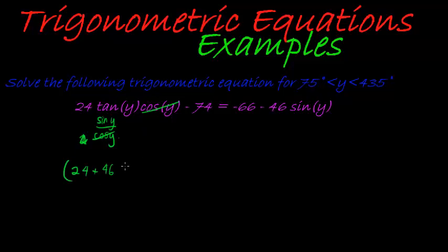And negative 46 on that side, so I can add the two. So when I add 46 sine y on the right hand side, I also do it on the left hand side to see that I have got 24 plus 46 sine y equal to, here I have got negative 66 on the right hand side.